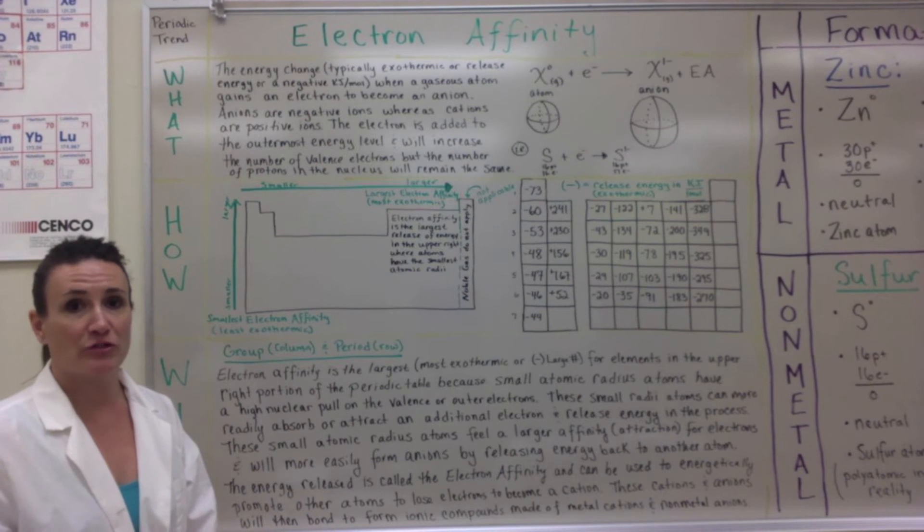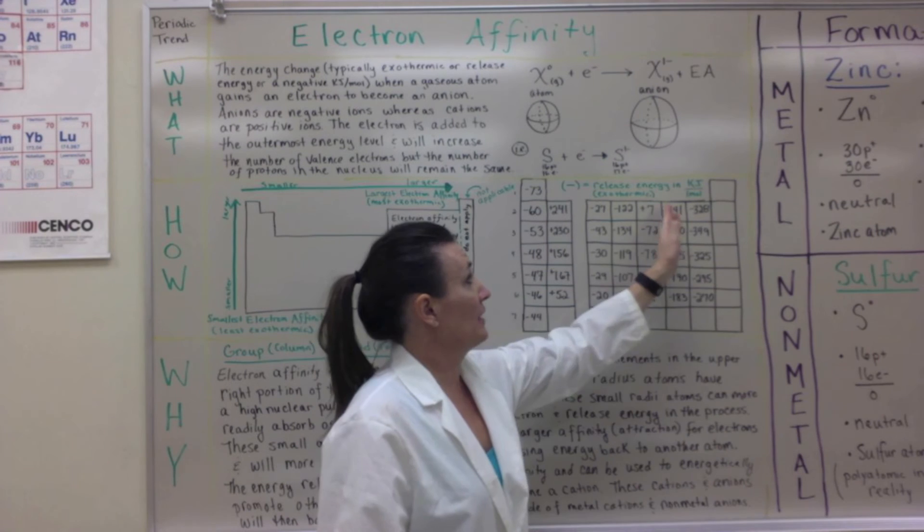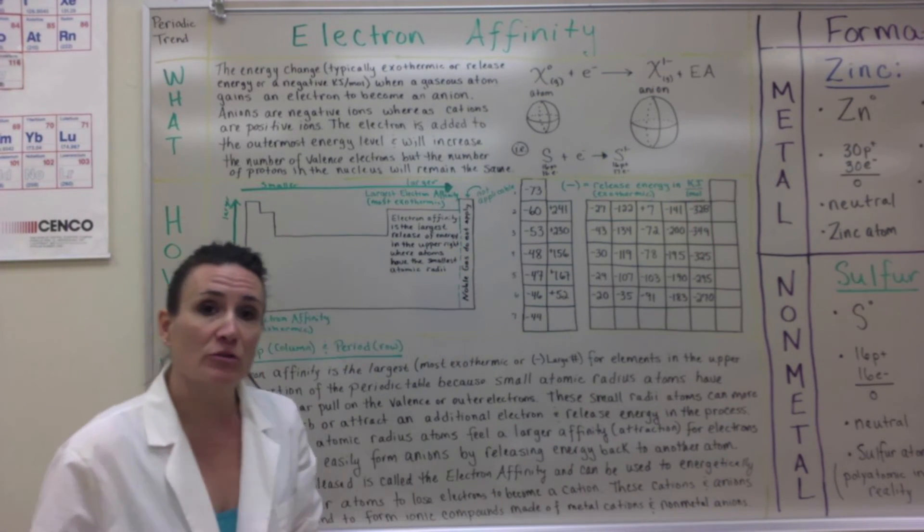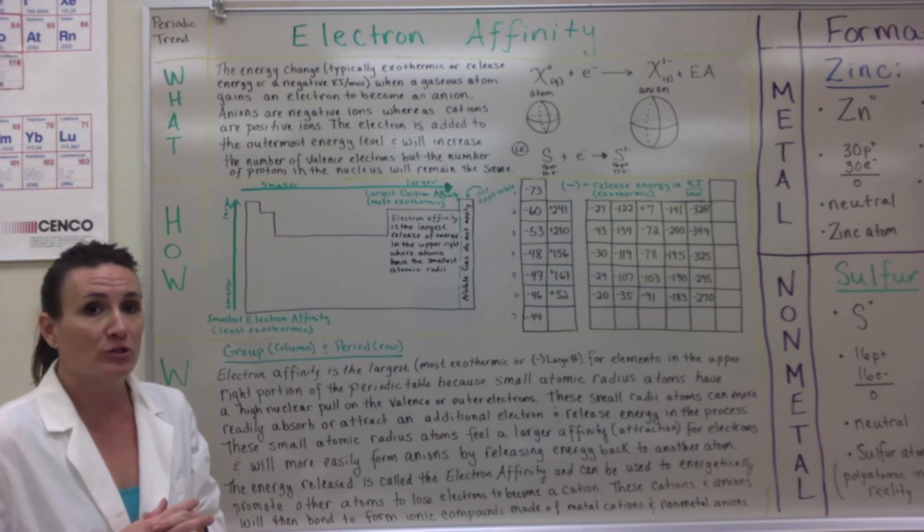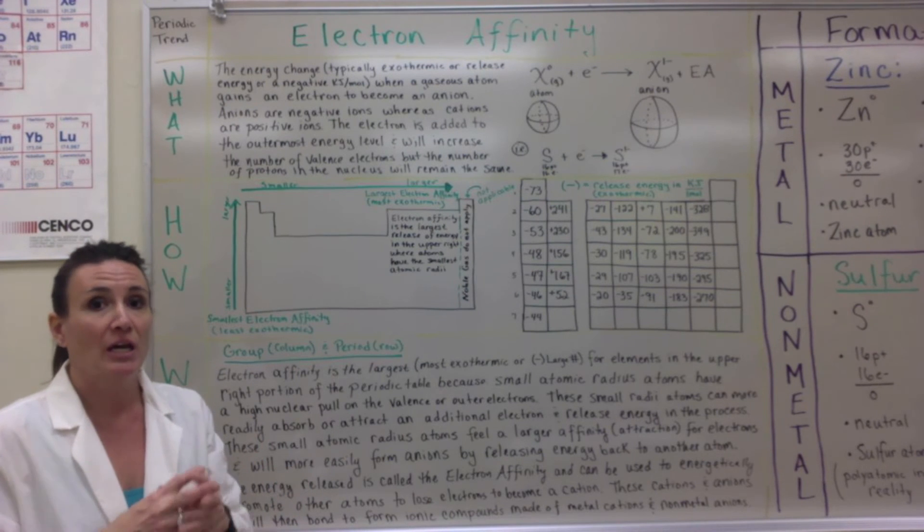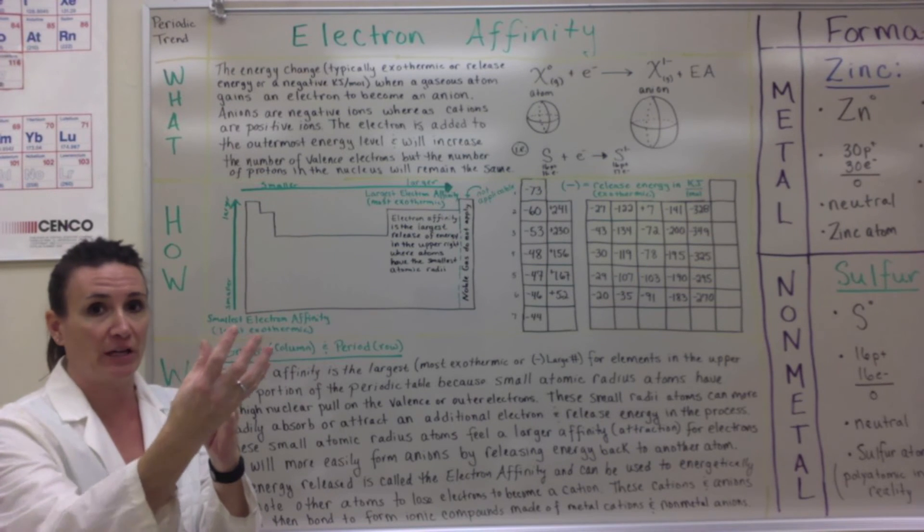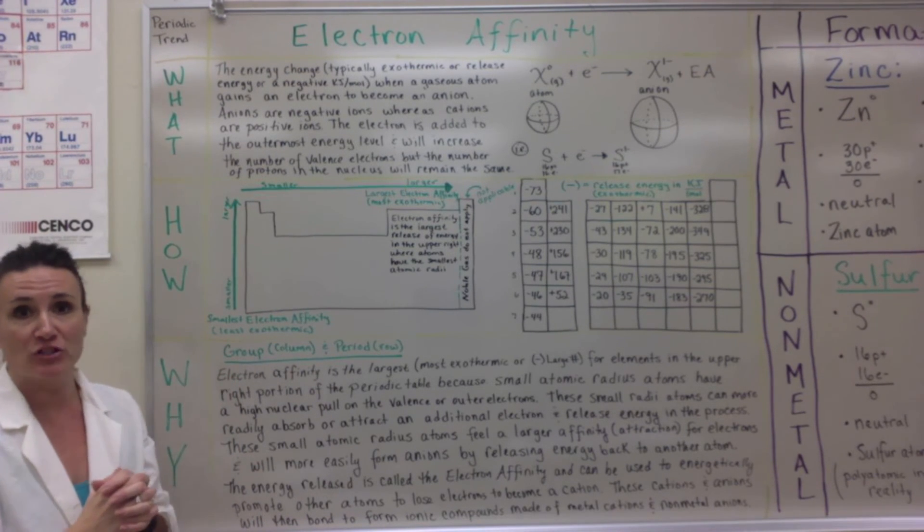The last periodic trend that helps us understand ionic bonding is electron affinity. Electron affinity is an exothermic energy, so in the upper right corner of the periodic table, those non-metals will release more energy when they gain an electron, which means they're more likely to give back energy to the reaction. They have small radii, so they have a high hold on their electrons and can also pull on electrons from other atoms, exothermically giving that energy back.